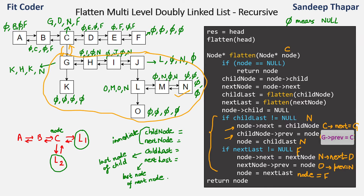So we've connected C's next to the first node of the child list, which is child node G, by setting node.next equal to child node and child node.previous equal to node. Since we are using recursion bottom-up, the assumption is that the entire child linked list is already flattened, so we simply go to child last node N and set node equal to child last. Then we connect that list to DEF by connecting node to next node D, and move to next last F.